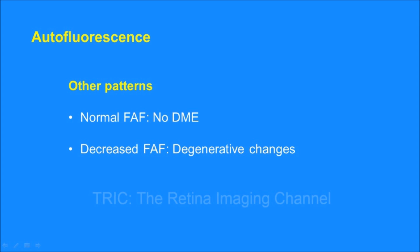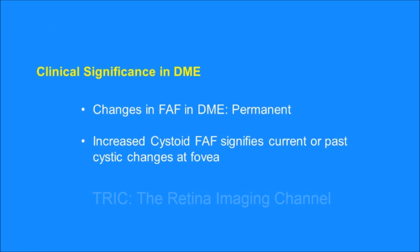There can also be decreased autofluorescence signals at the fovea. This happens if there is a large hard exudate clump at the fovea or there are degenerative changes. The autofluorescence pattern can be normal if there is no diabetic maculopathy.